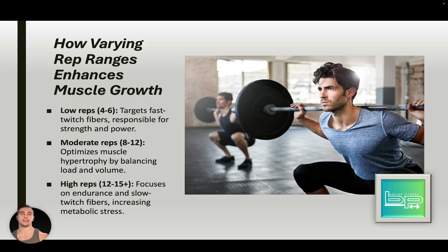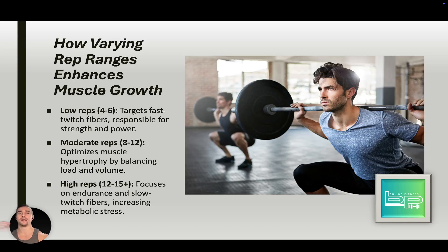Moderate reps (8-to-12) optimize muscle hypertrophy by balancing load and volume, activating both fast and slow twitch muscle fibers. High reps (12-to-15 plus) focus on endurance by activating slow twitch muscle fibers and increasing metabolic stress. So to summarize: low reps target strength, moderate reps target hypertrophy, and high reps target power and endurance.